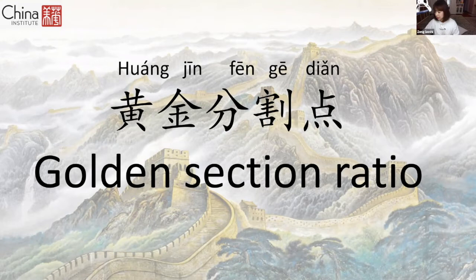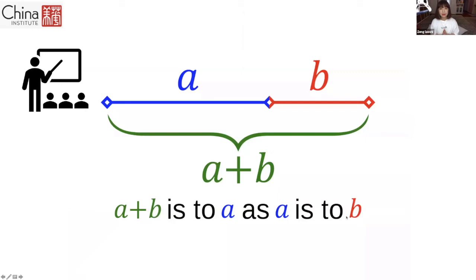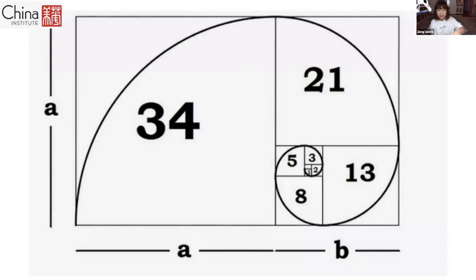You may have heard it before, you may not, but don't worry. The formula is: A plus B is to A as A is to B. You don't have to really understand how it works, just keep it in mind. They use this formula to create a spiral line — you see, right? A spiral line getting into a smaller and smaller area.